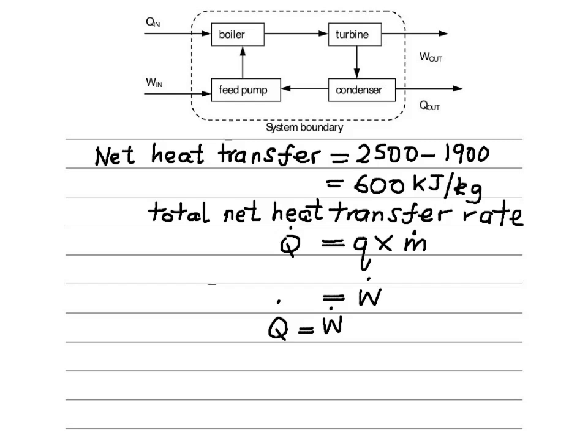So now we know W dot can be calculated as 896 kilowatts. Remember, 900 comes out but we have to put 4 kilowatts to drive the steam back to the boiler. So the net work is 896 kilowatts.